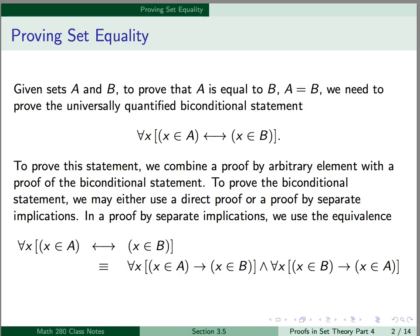To prove the biconditional, we may either use a direct proof or a proof by separate implications. In a proof by separate implications, we can use the equivalence: for all x, x is an element of A if and only if x is an element of B, is logically equivalent to: for all x, x is an element of A implies x is an element of B, and for all x, x is an element of B implies x is an element of A. The first conditional is equivalent to saying A is a subset of B, while the second is equivalent to saying B is a subset of A.